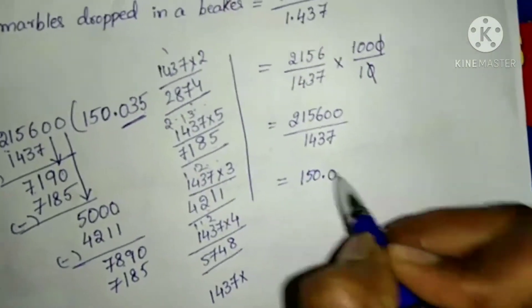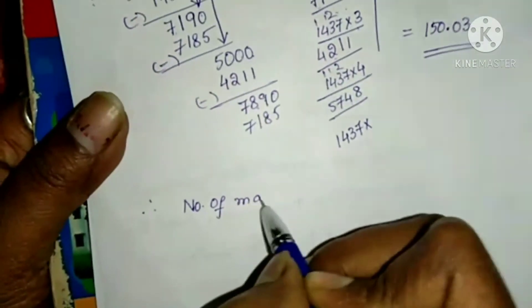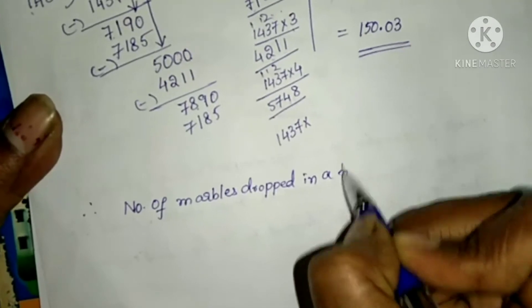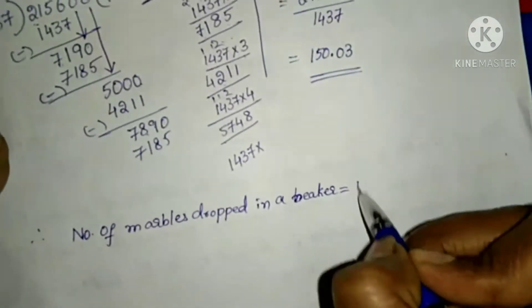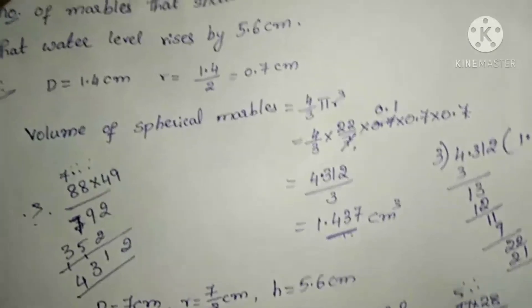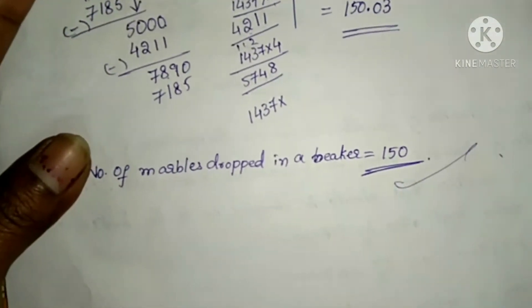Therefore, the number of marbles dropped in the beaker equals 150. After the point there are decimal values, but since we need a whole number of marbles, the answer is 150 marbles dropped in the beaker.